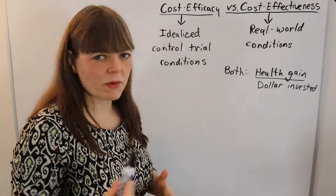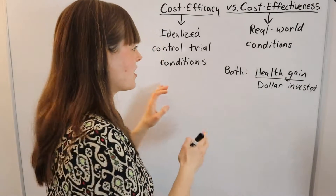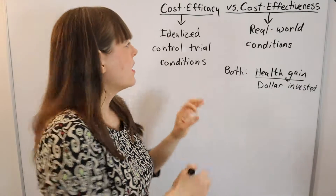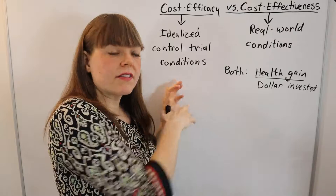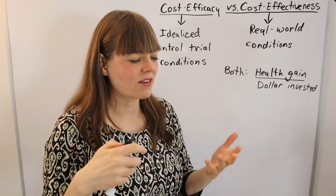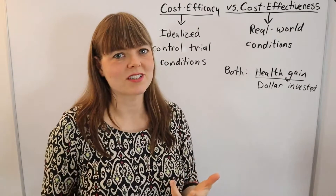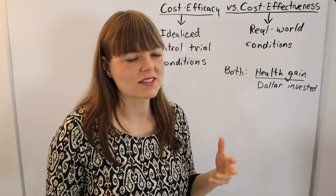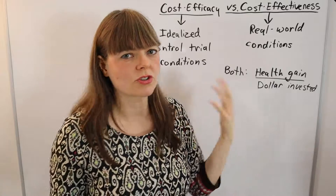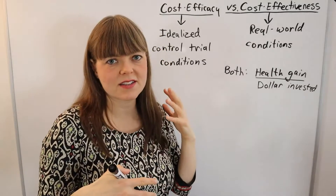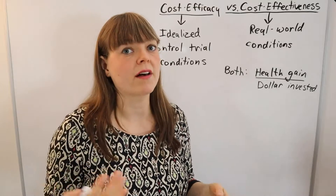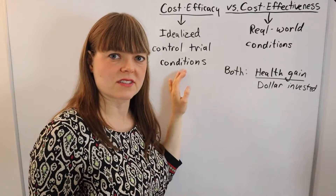One way of thinking about this: if you consider what's the health gain from a particular drug in a control trial, they are going to exclude complicated patients — patients with a bunch of secondary illnesses, patients who are too old or too young to get a benefit. Basically, the people selected for a control trial are the ideal patients.